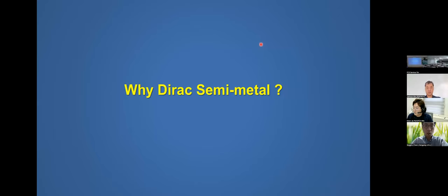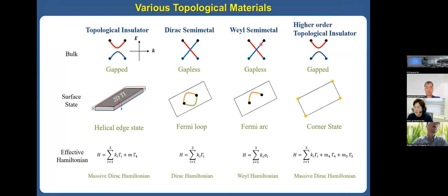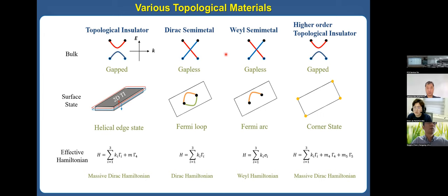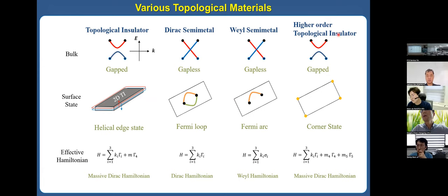We are interested in Dirac semimetals. Why is the Dirac semimetal interesting? There are many topological materials studied and suggested. For example, topological insulators have a gap in the bulk and a helical edge state on the boundary. Dirac semimetals and Weyl semimetals have a relativistic dispersion and gapless structure. They also have interesting surface states such as a Fermi loop or Fermi arc. For higher-order topological insulators, they are gapped but have interesting corner states on the boundary.